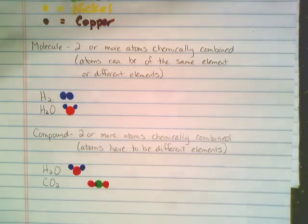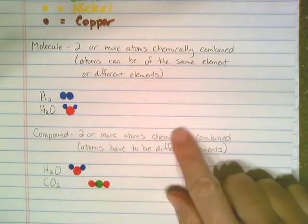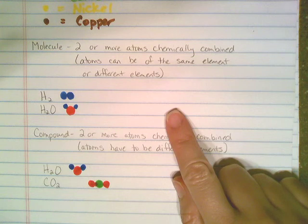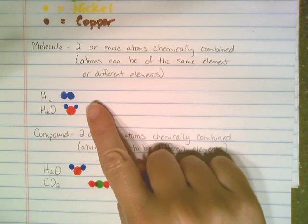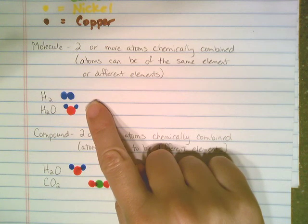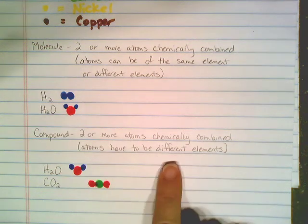Stuck to one another because they have a chemical bond between them. All compounds are also molecules, but we would not call all molecules compounds. H2, for example, would not be called a compound because both atoms together are hydrogen. They have to be different elements to qualify as a compound.